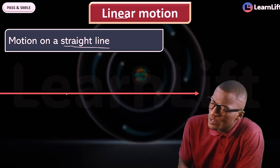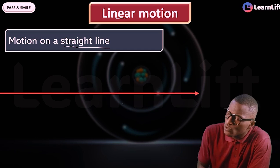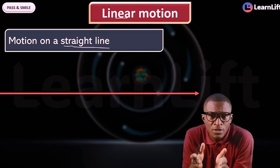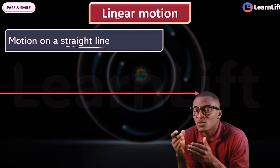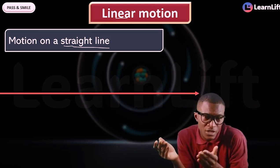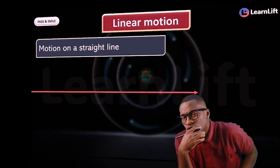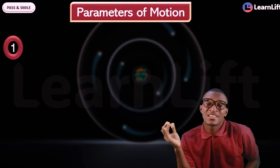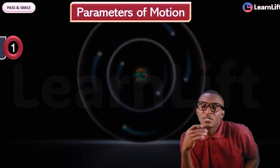For example, a body moving from point x1 to point x2, following a straight line direction — that is what we study as linear motion. Now let's talk about the parameters of linear motion. The first parameter I'm going to talk about is displacement.